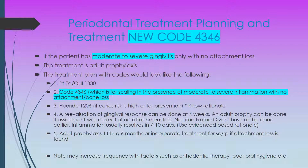The treatment plan with codes for moderate to severe gingivitis would look like: one, patient education and oral hygiene instruction — code 1330; two, code 4346, which is for scaling in the presence of moderate to severe inflammation with no attachment or bone loss; three, fluoride if indicated. Next, we do a re-evaluation of the gingival response, which could be done at four weeks, since connective tissue heals at roughly four weeks and epithelium heals at roughly two weeks. Although this code has been introduced, no specific timeframe has been given for transitioning from the 4346 to the adult prophy.